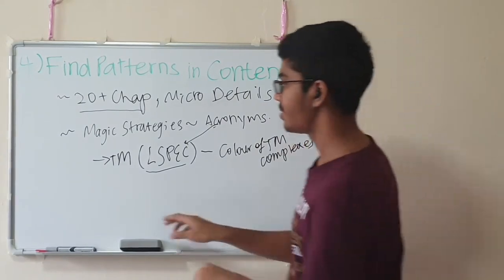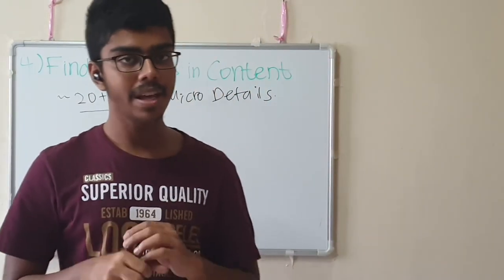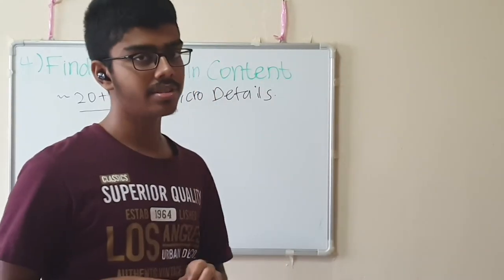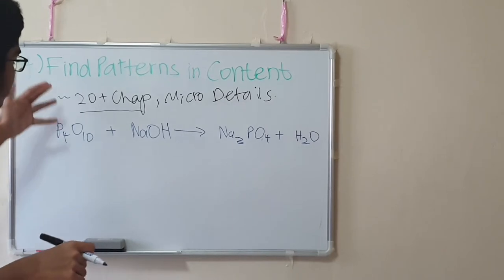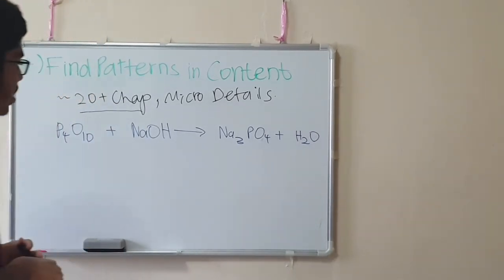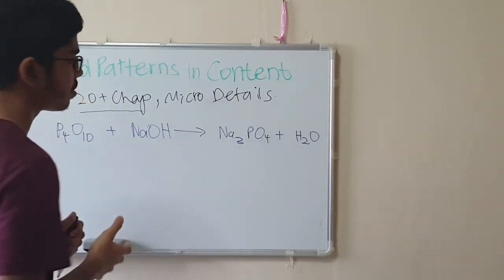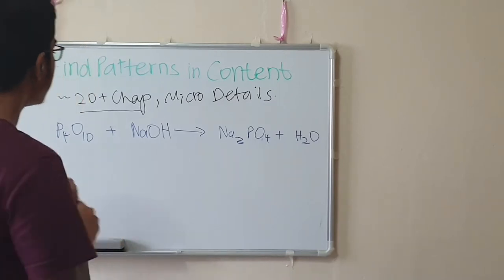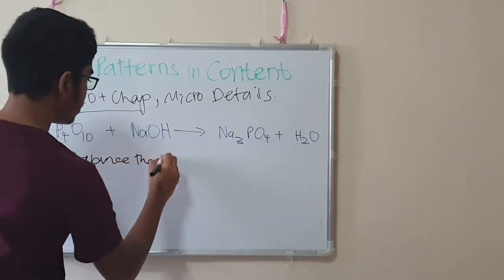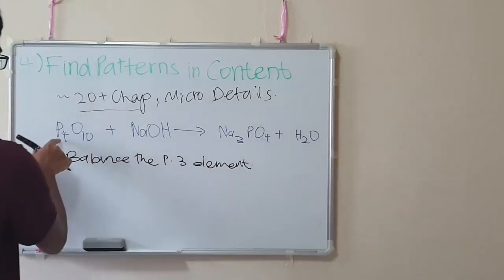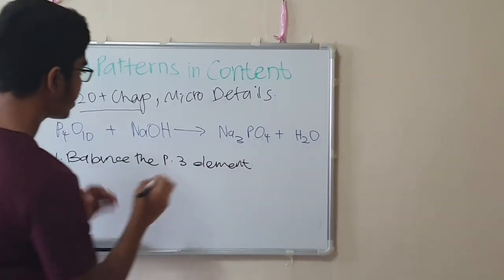I'll show you the second strategy. In organic chemistry, the topic of periodic table, there's one main concept—the acid-base nature of oxides. There's so many equations you need to remember. This is an equation of a reaction of a period 3 oxide with a base, in this case NaOH. There's a lot of such equations you need to remember—not just phosphorus but also SO3, Al2O3, MgO. How do you remember it? The strategy I found was: first, balance the period three element. There's one phosphorus here, there's four phosphorus, so you put the number four right here.